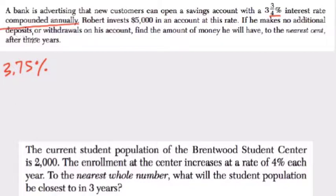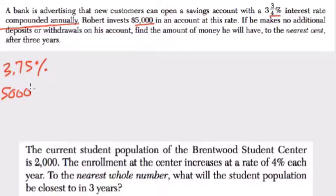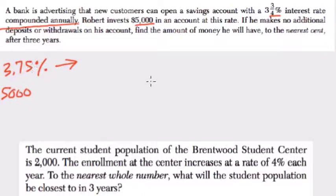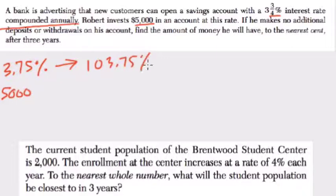So that means that if you start with $5,000, after the first year you'll gain 3.75%. I like to think of that as a gain of 103.75%, because you have your original $5,000 plus 3.75% of that. So 103.75% is our total gain.